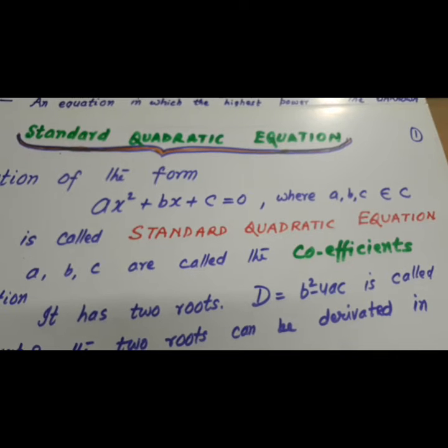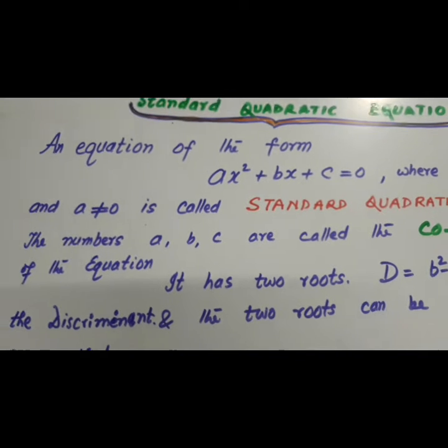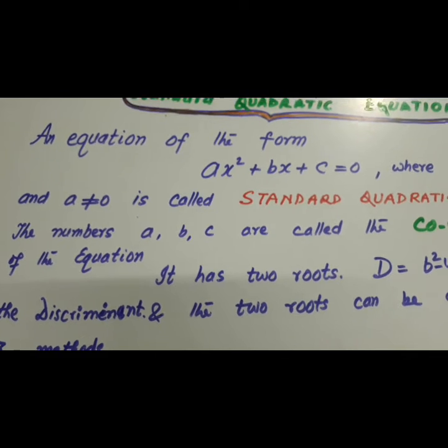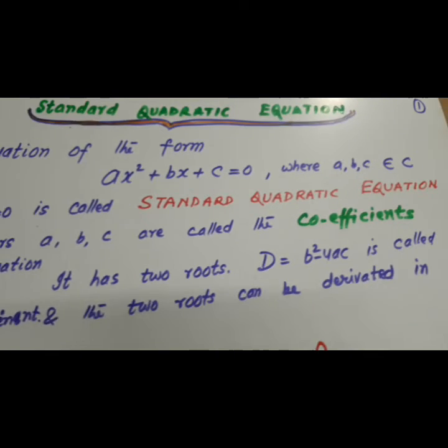where A, B, C belong to the set of complex numbers and A is not equal to zero. So, this is a must condition. This is called standard quadratic equation.